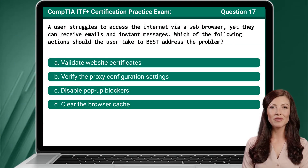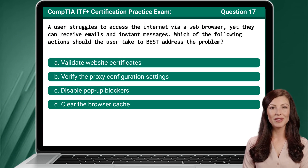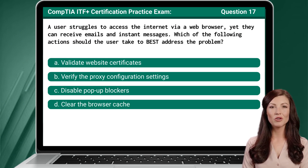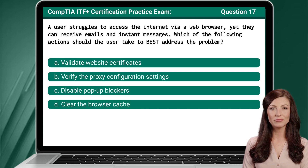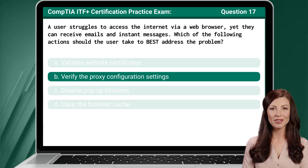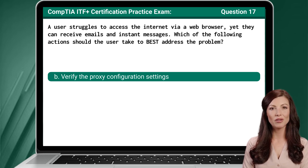Question 17: A user struggles to access the internet via a web browser, yet they can receive emails and instant messages. Which of the following actions should the user take to best address the problem? The answer is B: Verify the proxy configuration settings.